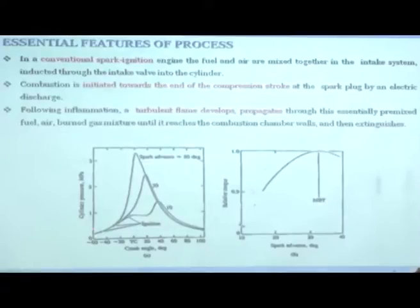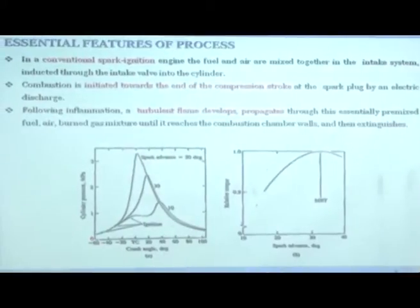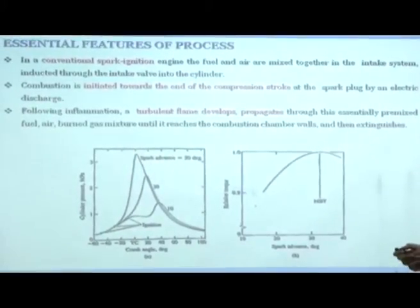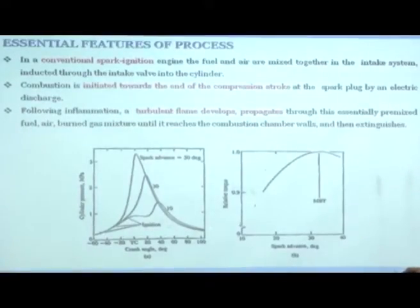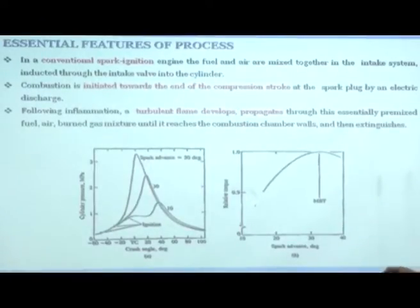Now I am going to introduce a very interesting concept — the cylinder pressure diagram for the spark ignition engine. This is the top dead center. On one side you have the compression stroke and on the other side you have the power stroke. Just look at the one curve where 10 degrees is written.